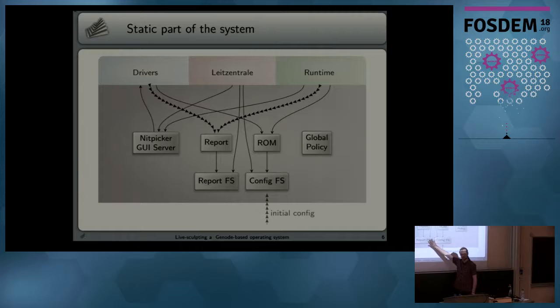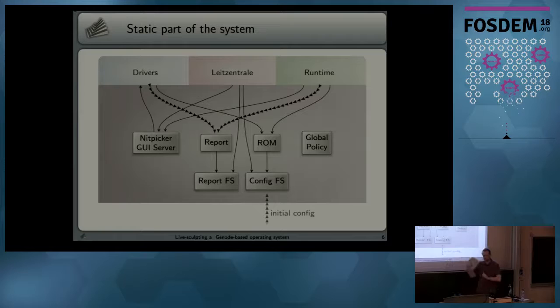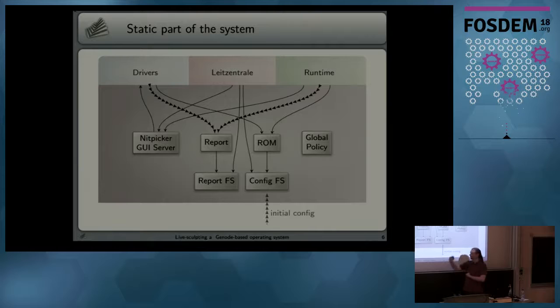There are two file system components - just RAM file systems stored in memory. One file system is used to capture reports. Components on top of the static system can produce reports and speak about their state. For example, when I booted up the system and the screen resolution looked strange, I could look at the report in the graphics driver and see what connectors and resolutions are available. These reports all come in and are put into this file system. The components don't need to know they are writing to a file system - they just know the concept of a report.